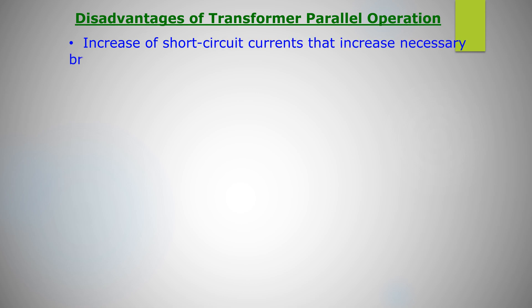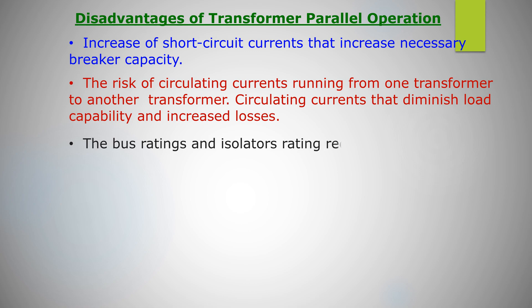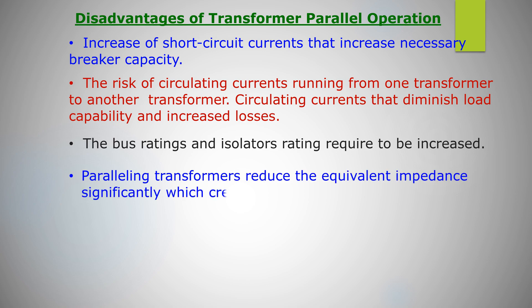Disadvantages of transformer parallel operation: increase of short circuit currents that increase necessary breaker capacity, the risk of circulating currents running from one transformer to another transformer, circulating current that diminish load capability and increased losses. The bus ratings and isolator ratings require to be increased. Paralleling transformers reduced the equivalent impedance significantly which creates high short circuit current in the event of fault.